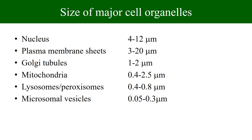This slide gives an idea about the size of various cell organelles, since size matters greatly in the separation of biomolecules in a centrifugal field. The nucleus is quite large at 4 to 12 micrometers. Mitochondria range from 0.4 to 2.5 micrometers. Microsomal vesicles are very small at 0.05 to 0.3 micrometers. Therefore, in centrifugation, nucleus will sediment almost first, while microsomal vesicles will sediment last.